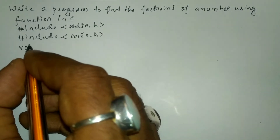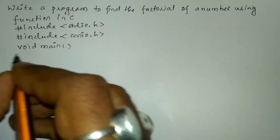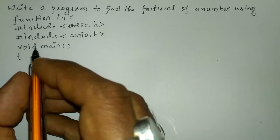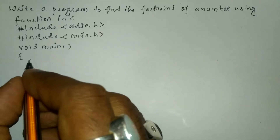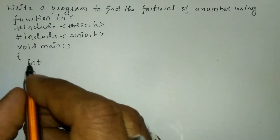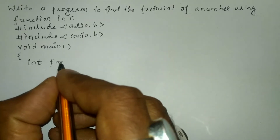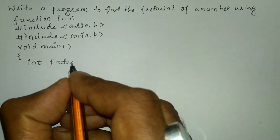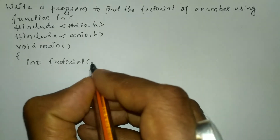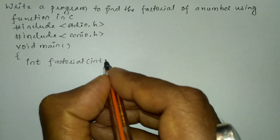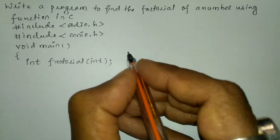Now we are going to write the main function with a curly open brace. Here I am going to declare the function prototype. The return type is int, the name of the function is factorial, and inside the bracket I am going to pass one argument of type integer, then put a semicolon.